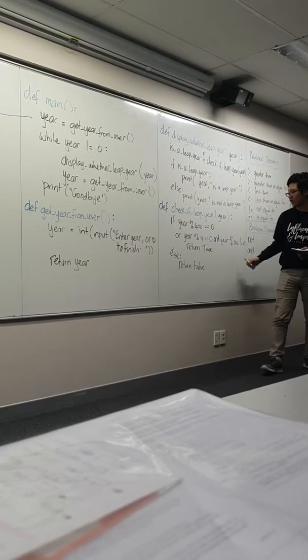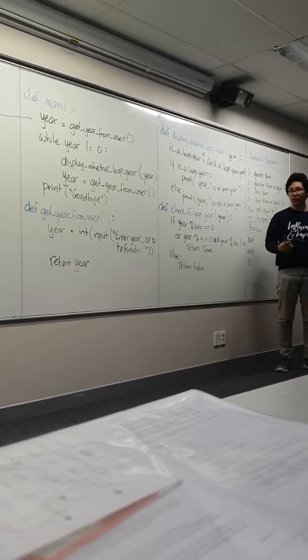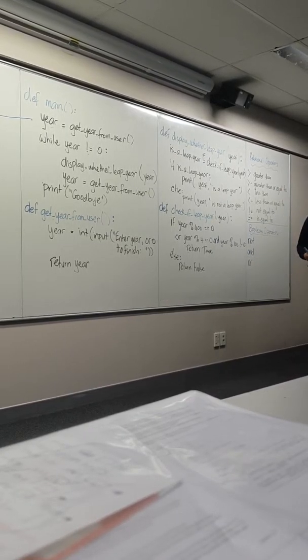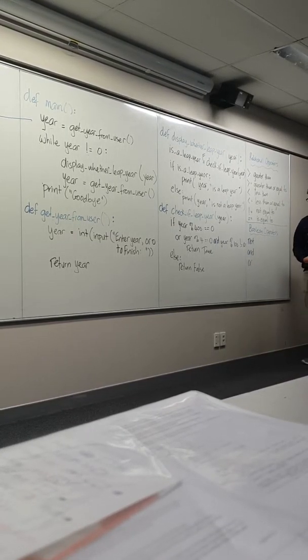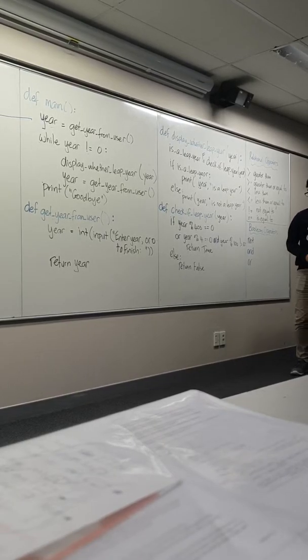Or the year is divisible by 4 and the year is not divisible by 100 at the same time. So that's kind of how it works.